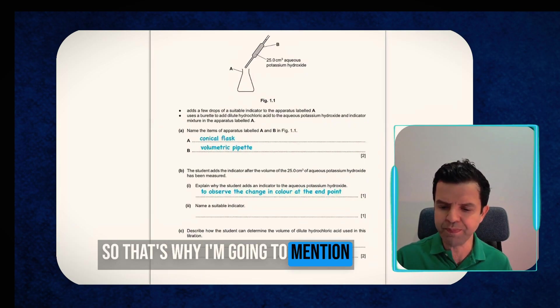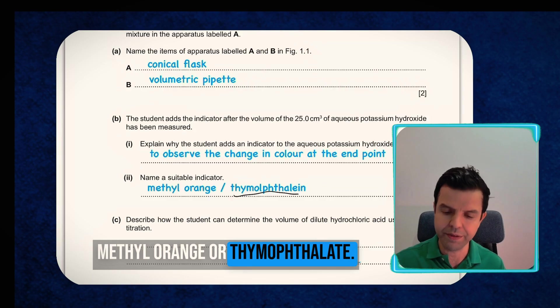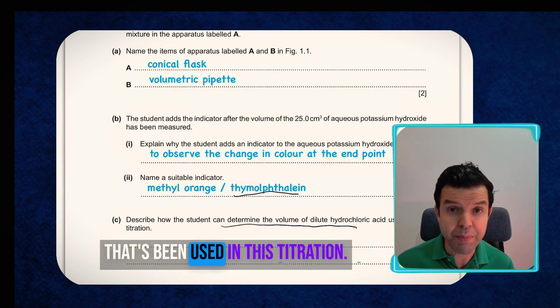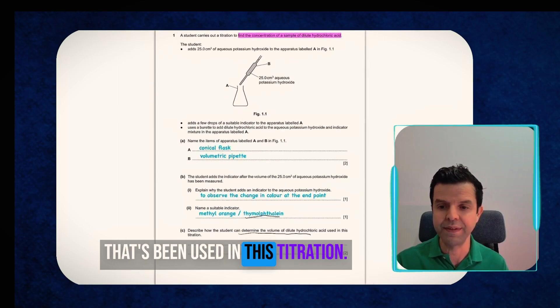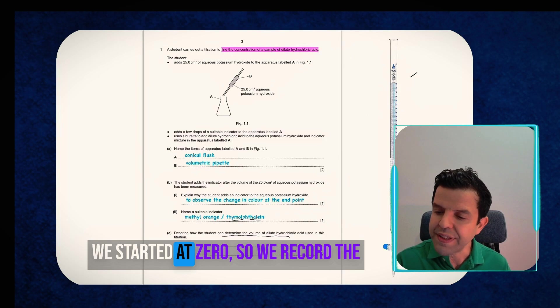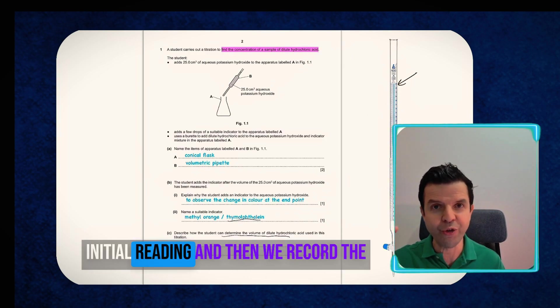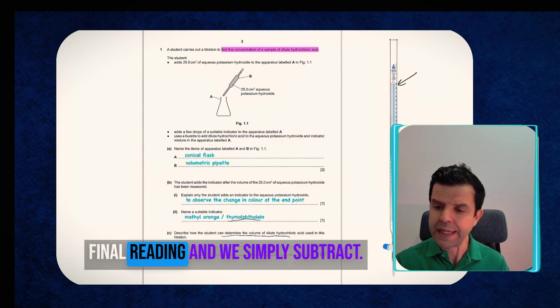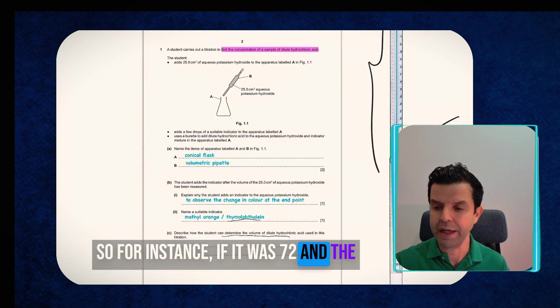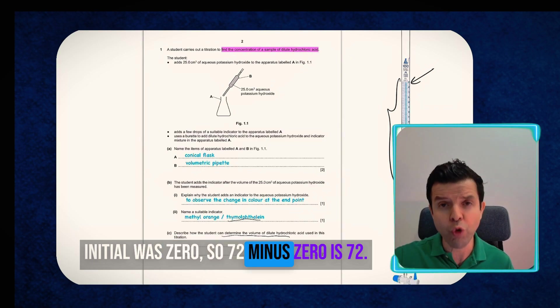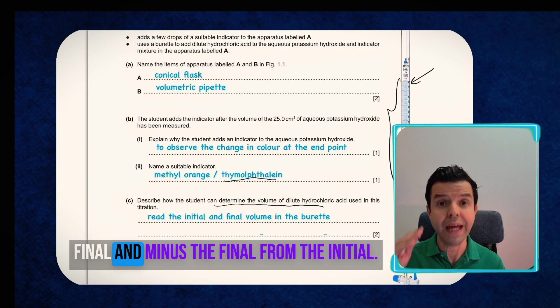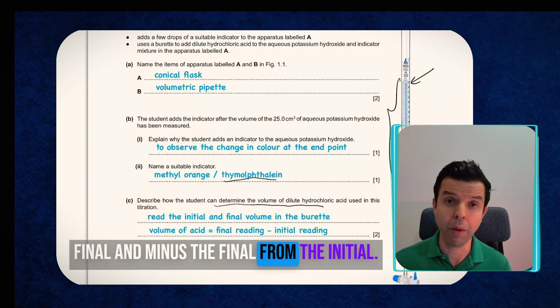So describe how the student can determine the volume of the acid that's being used in this titration. Here is my burette. Let's assume that we started at 0. So we record the initial reading and then we record the final reading and we simply subtract. So for instance, if it was 72 and the initial was 0, so 72 minus 0 is 72. So just tell them, read the initial and final and minus the final from the initial.